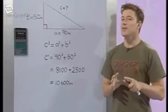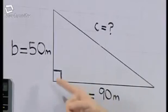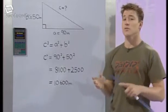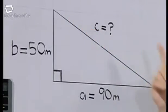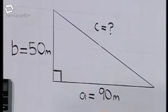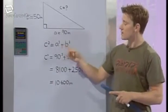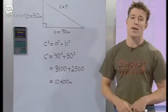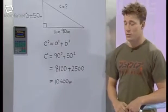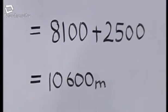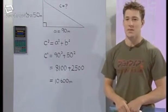The key to answering this is to realise that the man, the cliff and the rope all form a right-angled triangle. The hypotenuse is the length of the rope, so I've labelled that C. I've called the distance from the man to the cliff A, and the height of the cliff B. From Pythagoras' theorem, C squared equals A squared plus B squared, which is equal to 90 squared plus 50 squared, and that's 8,100 plus 2,500. So, C squared equals 10,600. The rope needs to be at least 10,600 metres long.